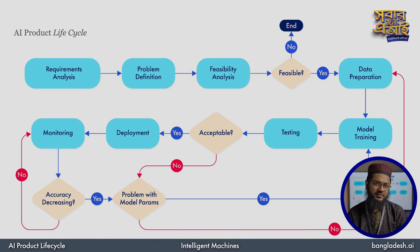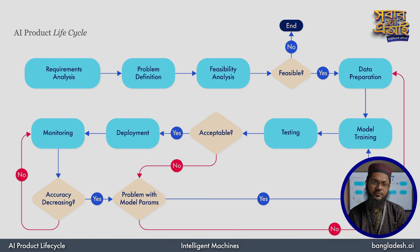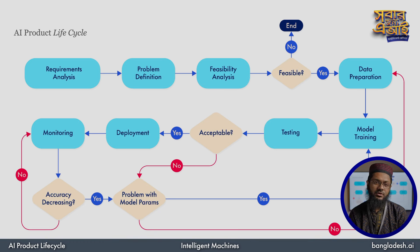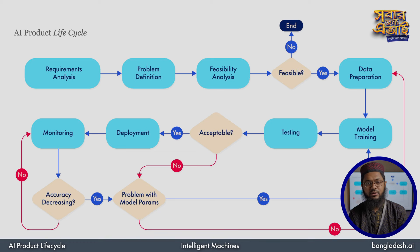We are going to start with requirement analysis — we are going to collect requirements and analyze a set of problems, define the requirements, and analyze the feasibility. Then we will proceed to the process of data preparation, model training and testing. We are going to test the accuracy of the result and test the accuracy of the data and model.